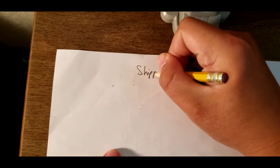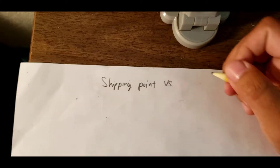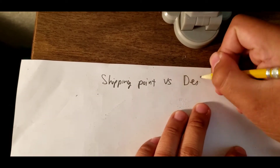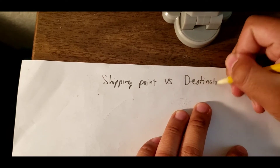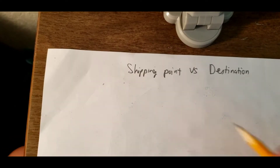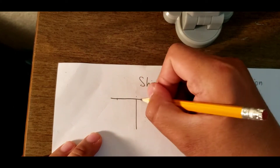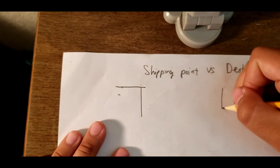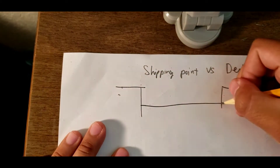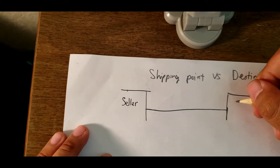Hello everybody. Today I will talk about shipping point and destination. This will be on the accounting test, so we need to learn about it. First, we need to draw the diagram — let's see about seller and buyer.